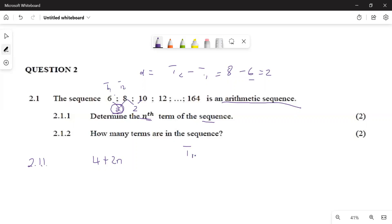After that, you can use the following formula. It says TN is going to be A plus (n minus 1) multiplied by D, where A represents the first term. What is the first term here? The first term is 6. What is our difference? It's 2.